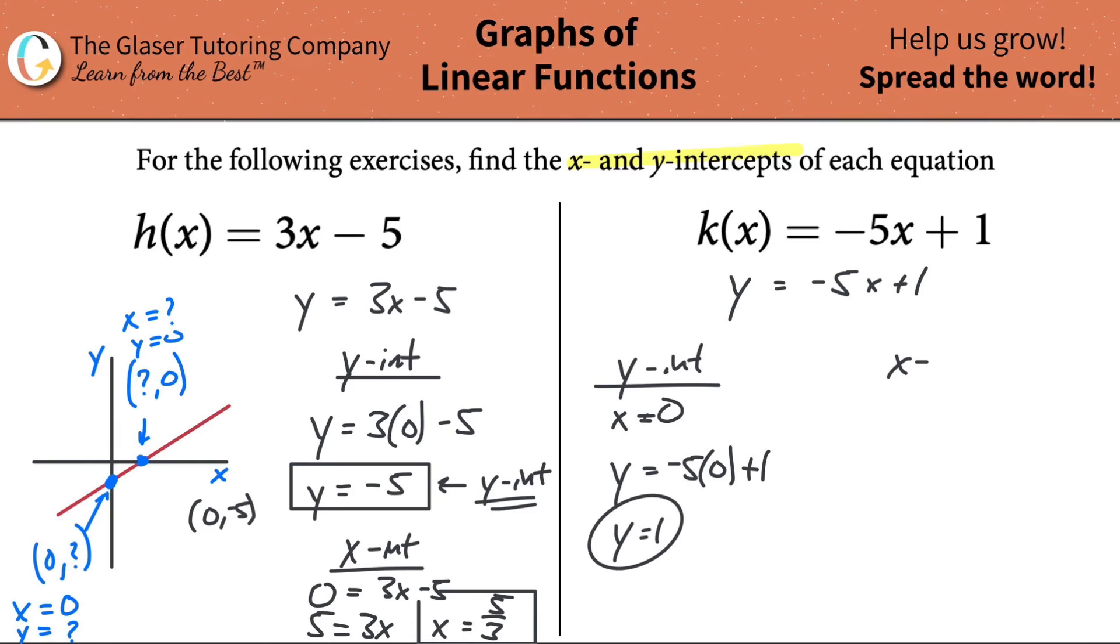Let's now do the x intercept. Remember, the x intercept is when y is equal to zero. So now it's going to be zero is equal to negative five x plus one. I'm going to add the five x on over to the left hand side. When we do that, we get then five x equals one. Divide both sides by five, and x is equal to one fifth. That is the x intercept.